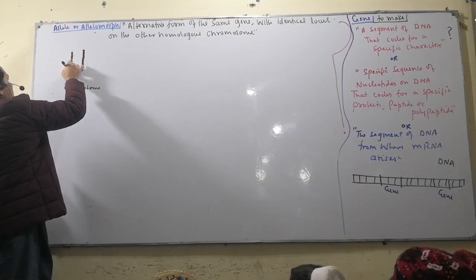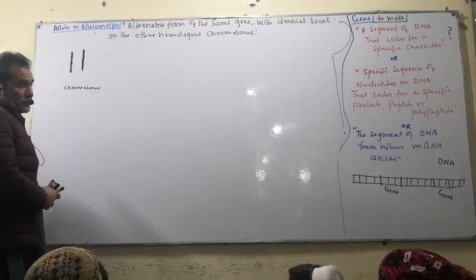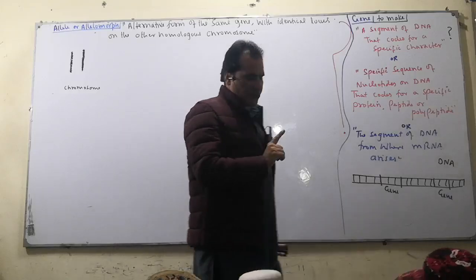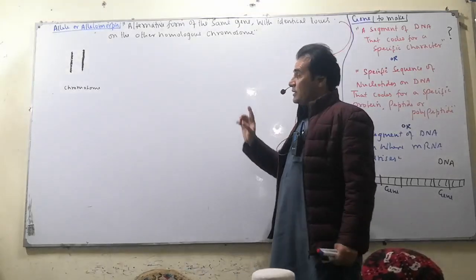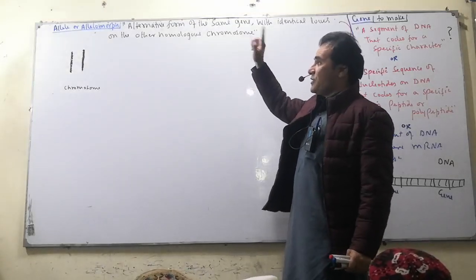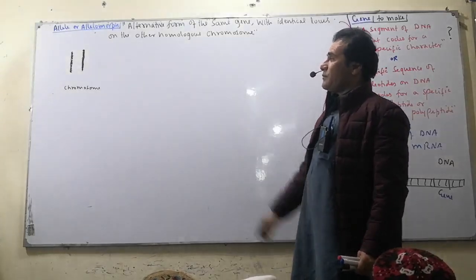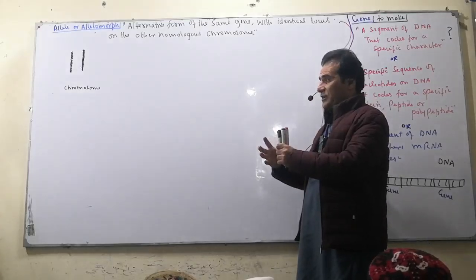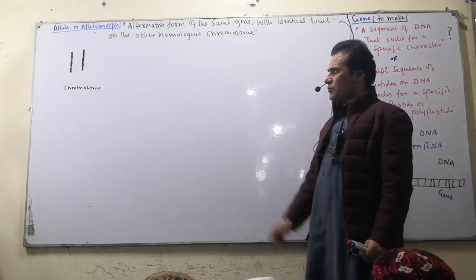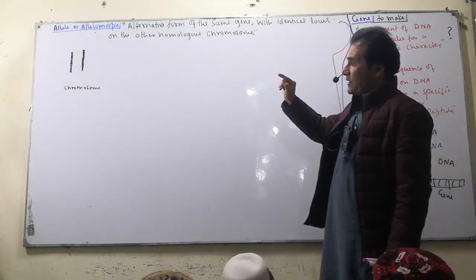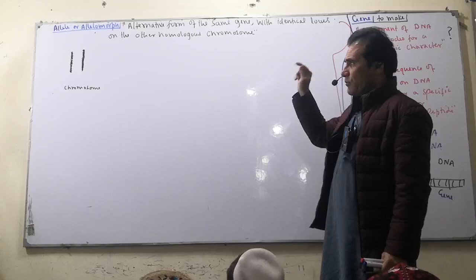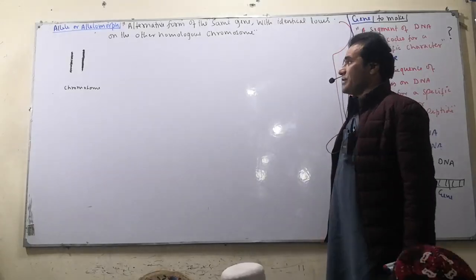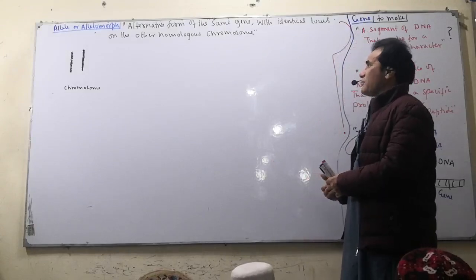The chromosome is uninemic. Uninemic means a single DNA molecule forms a single chromosome. From start to end, the DNA molecule is threaded with protein to form a chromosome. This structure is protein plus DNA — the DNA and protein together constitute the chromosome.